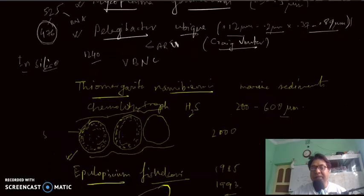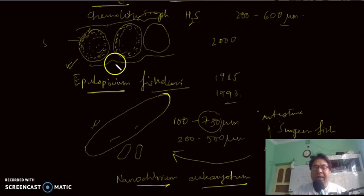The size may range from 0.12 micrometer of Pelagibacter ubique to 750 micrometer of Epulopiscium, or 600 micrometer diameter of Thiomargarita namibiensis. Thank you very much for your silent listening. If you like this video lecture, please share and subscribe for its popularity. Thank you.